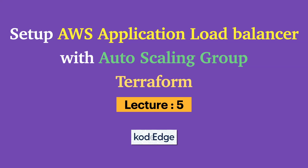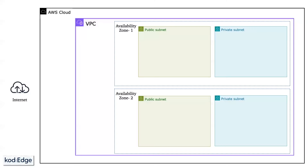Let's deep dive into the architecture. In the AWS cloud, we will first create a VPC with public and private subnets spread across two availability zones for redundancy. Within the public subnet, we will deploy an Internet Gateway and a NAT Gateway. The Internet Gateway will allow internet traffic to resources in the public subnet.